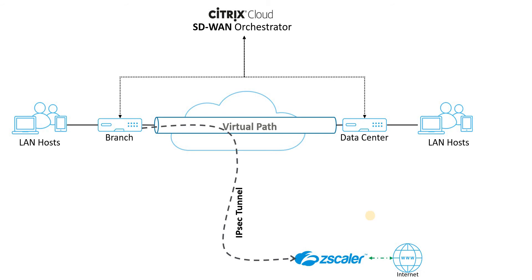With this integration between Citrix SD-WAN and Zscaler Secure Web Gateway, we will be able to perform direct internet breakout on the branch appliances without compromising on any security. The branch appliance will be establishing an IPsec tunnel towards Zscaler Cloud, and the internet traffic will be forwarded through that tunnel.